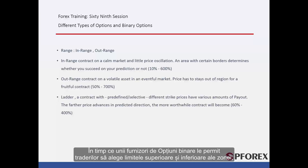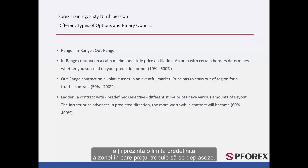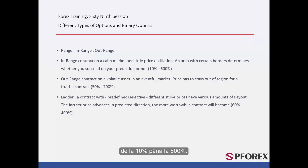While some binary option providers permit traders to select the high and low boundaries of the region, others represent a predefined edge of the area that price must move within. An area with tighter borders leads to a higher payout, ranging from 10% to 600%.